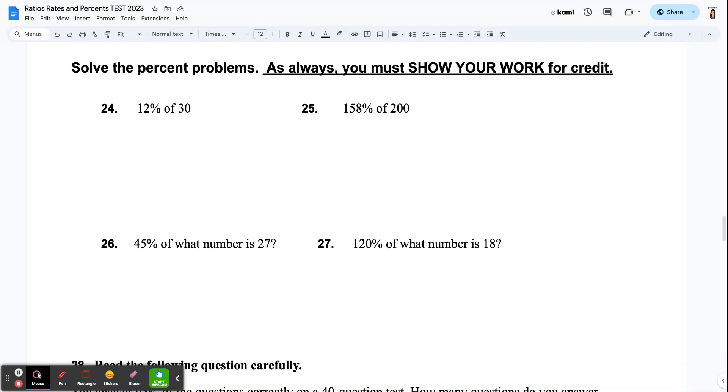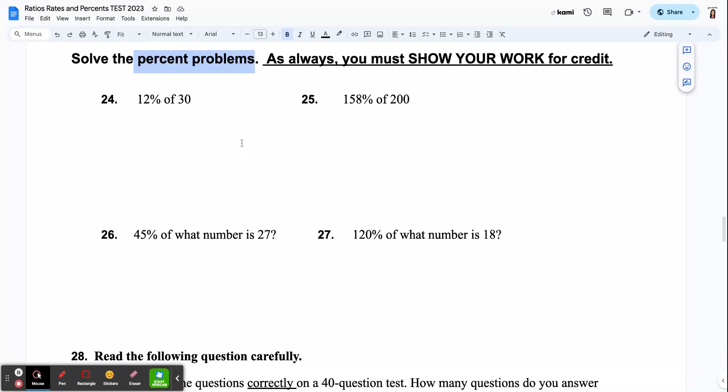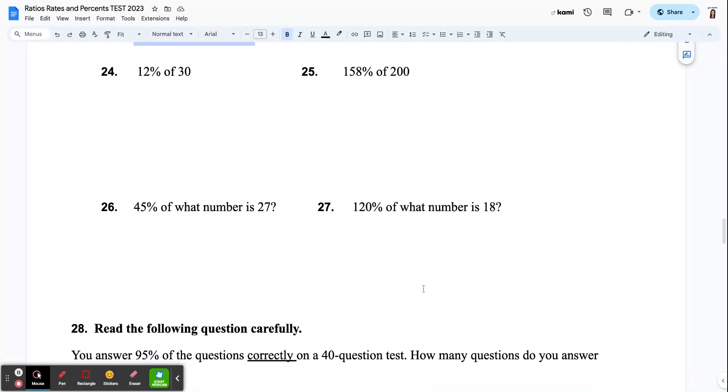And then the next part, you're still converting percents. This is just using percent problems. So if you can remember, when I say, as always, you must show your work for credit, I want to see your is over of here. If you have a totally different way of finding it out, I know one or two of you have successfully done it. You can explain that here.